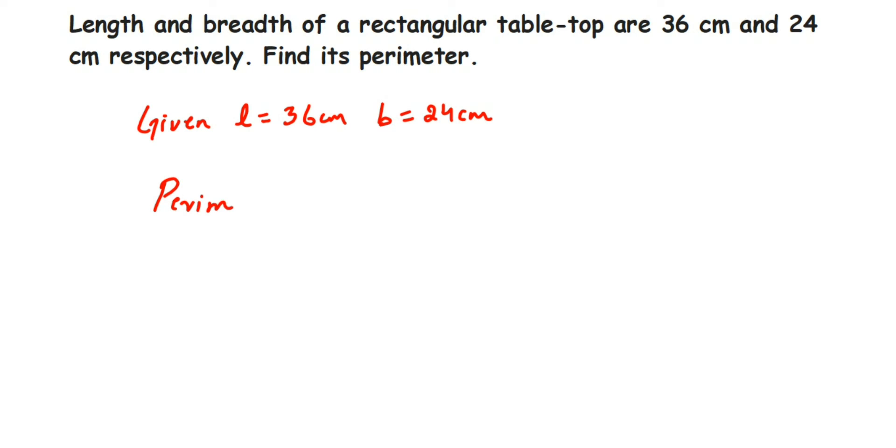So perimeter of table top will be equal to 2 into L plus B. We want to substitute the value here.